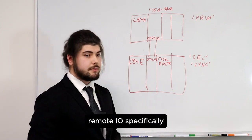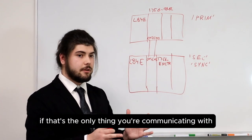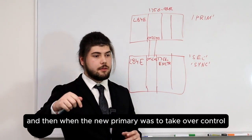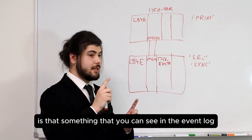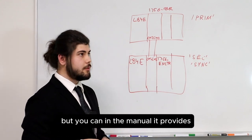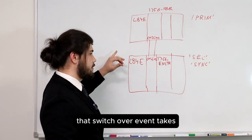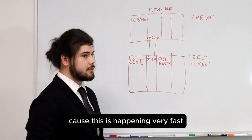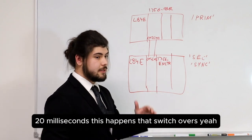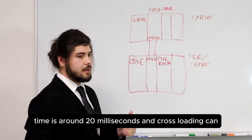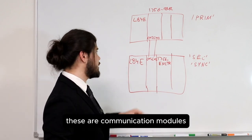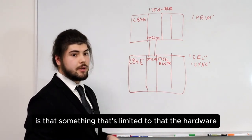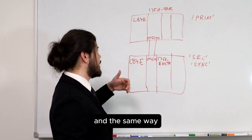IP swapping is a consideration specifically for remote IO — you don't need it for HMIs, for example. In the event log, everything is timestamped, so you can see when the switchover event occurred and when the new primary takes over control. The manual provides substantial documentation of how long that switchover takes. With Ethernet modules, communication can be lost momentarily during switchover — that loss of communication would be no longer than 20 milliseconds. The switchover time is around 20 milliseconds, and cross-loading can occur extremely fast as these communication modules communicate at 1,000 megabits per second. The switchover occurs automatically and is limited to the hardware and firmware.